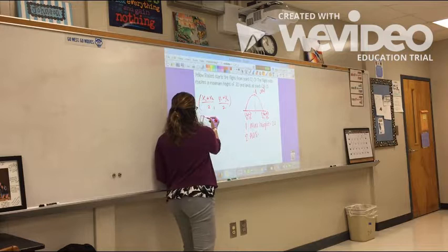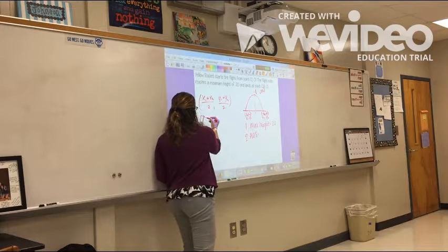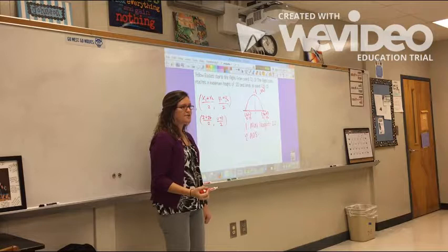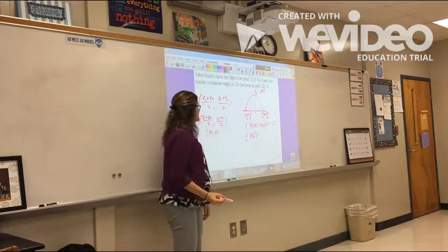Alright, what's x1? 2. 2 plus 26 divided by 2. And then my y's are 0, right? What's 2 plus 26? 28 divided by 2 is? 14,0. 14,0. So what's my axis of symmetry? 14,0.